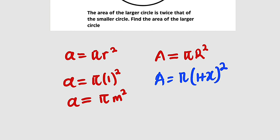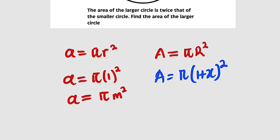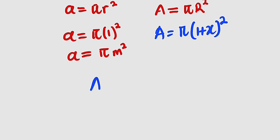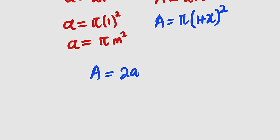But according to this statement, it's stated that the area of the bigger circle is twice the area of the smaller circle, which means capital A is equal to 2 small a. So now let us substitute it. What is the area of the bigger circle? It is given as pi 1 plus x squared. And this is equal to twice the smaller circle, which is just given as pi.